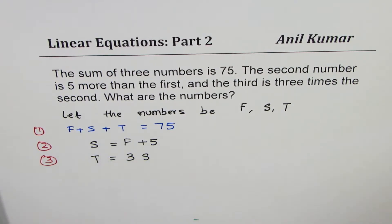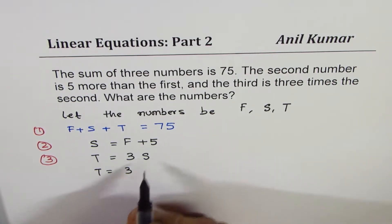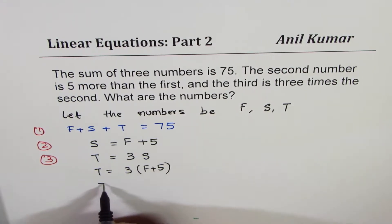So T = 3F + 15. Let me call this equation 4. Now we know S in terms of F, we know T in terms of F, and F as such.